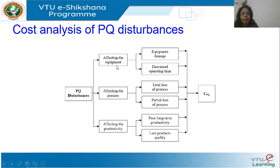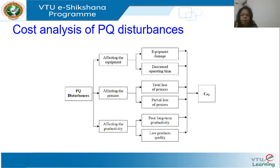What happens to equipment? There can be malfunction and decreased operating time — meaning life expectancy is reduced. If you operate equipment for a long time under harmonics, its life will be reduced. Similarly, if a motor operates with unbalanced voltage for a long time, it will definitely suffer. The equipment may not show obvious damage, but its life will definitely be reduced.